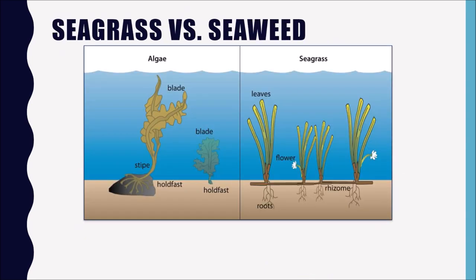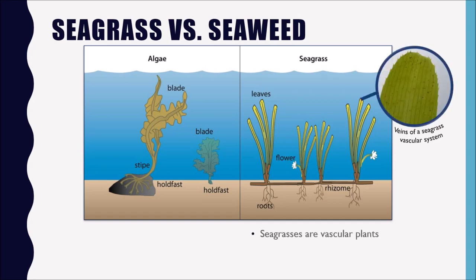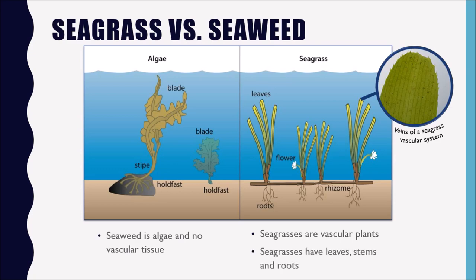A lot of people have trouble distinguishing between seagrass and seaweed — some people think it's the same thing, but those are two separate things. Seagrasses are vascular plants, which means they have specialized tissues to move water and minerals throughout the plant, whereas seaweed is algae and doesn't have any vascular tissue. Seagrasses also have leaves, stems, and a root system. Algae does not have a root system; some seaweed has a holdfast, which helps them attach to surfaces, but it's not really a root system like seagrasses have.